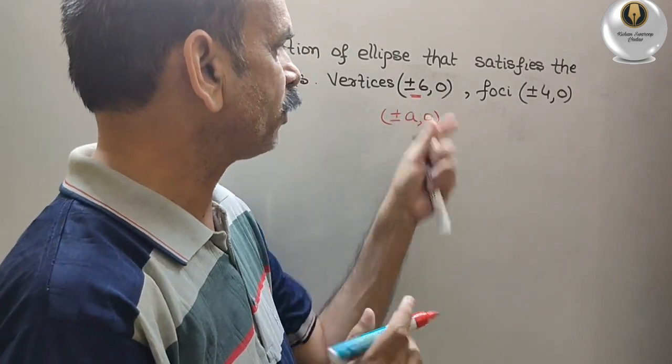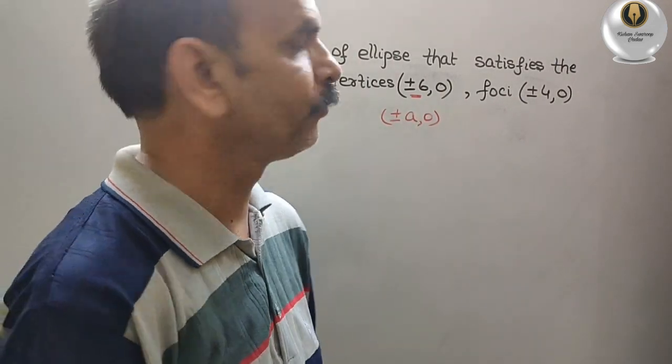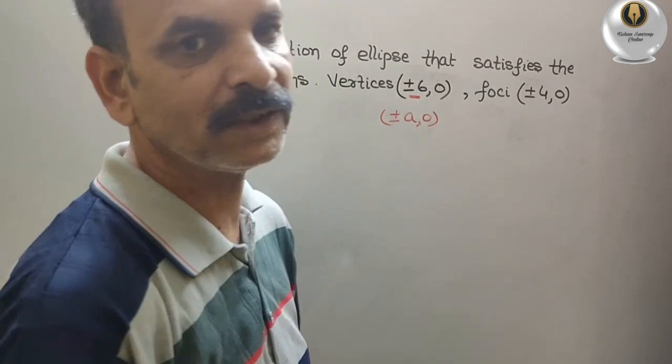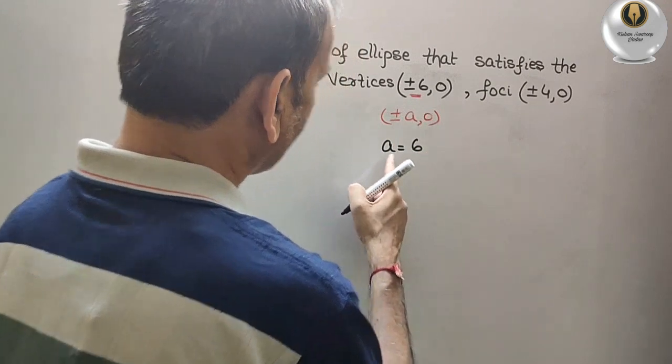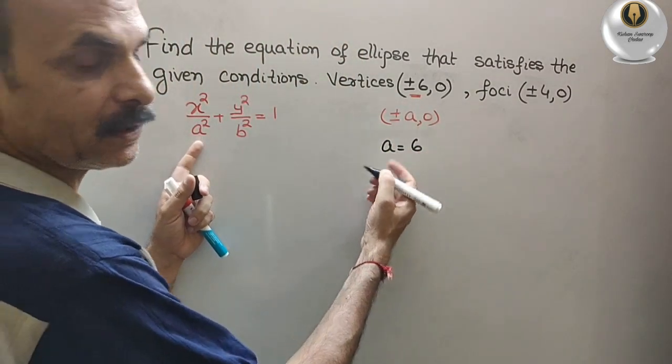So now if you compare this, what you will get? a is equal to 6. We will get a is equal to 6. Therefore, a square is 36.